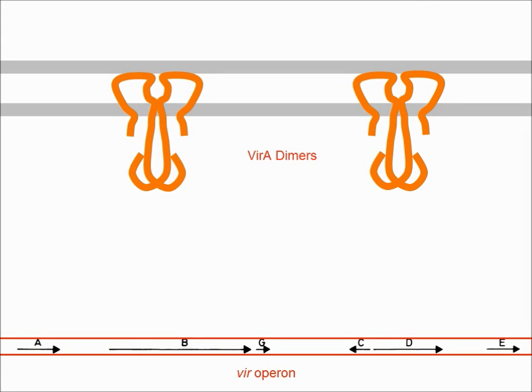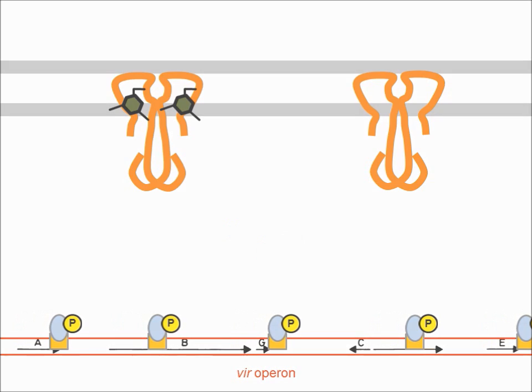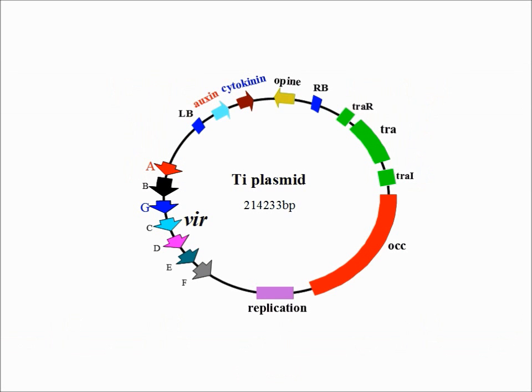The VIR-A receptor is a periplasmic protein which exists as a dimer. Upon binding to Acetoceryngone, it autophosphorylates and the phosphoryl group is subsequently transferred to a protein called VIR-G. When VIR-G is phosphorylated, it activates transcription of other virulence factors on the agrobacterium's Ti plasmid.